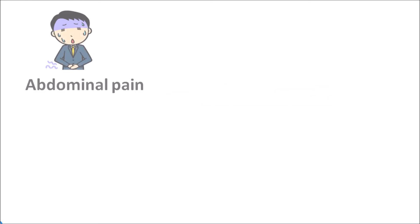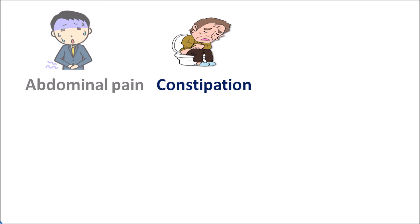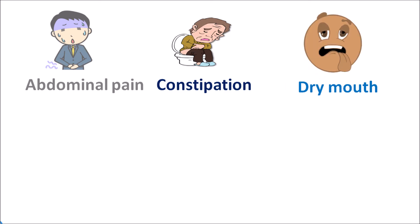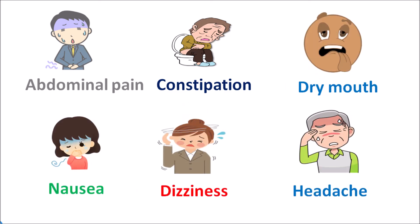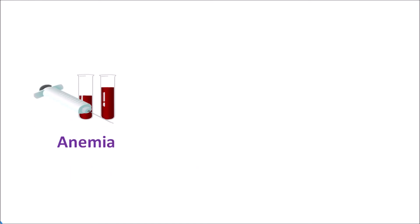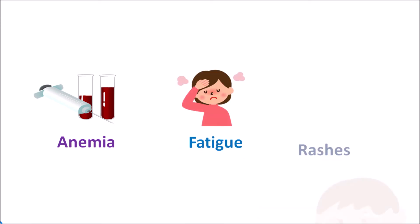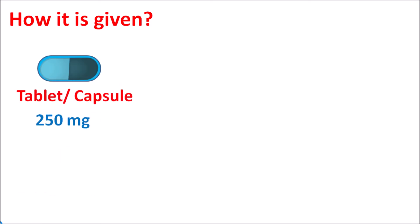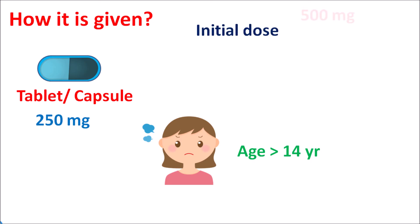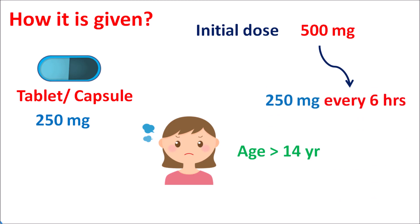The important side effects mainly include abdominal pain, constipation, and diarrhea as a hypersensitivity reaction. Other side effects like dry mouth, nausea, dizziness, and headache can be observed with this drug. On long-term use it can also produce anemia due to gastrointestinal bleeding, fatigue, and skin rashes. This drug is available as a tablet or capsule at 250 mg. In adults and adolescents greater than 14 years, the initial dose is 500 mg, then 250 mg every six hours to control mild to moderate pain. Due to cardiovascular complications, this drug should be used at a low dose to avoid thrombotic events.